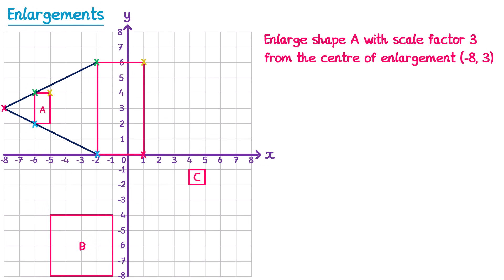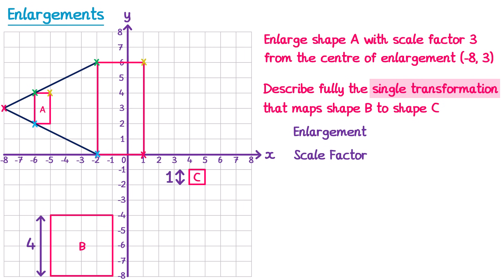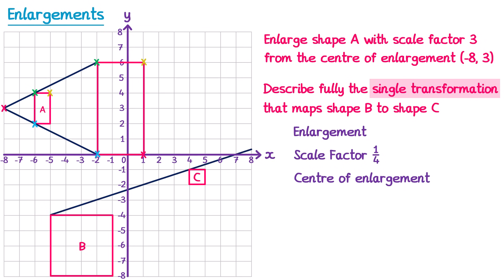Let's try a description question with shapes B and C, going from B to C — so the shape is getting smaller. This is still an enlargement; write that down for a mark. The height of B is 4 squares and the height of C is 1 square. Since we're going from B to C the shape has become one quarter of the size, so the scale factor is one quarter. Drawing straight lines through common points on both shapes shows they cross at the coordinate (7, 0), which is the centre of enlargement.